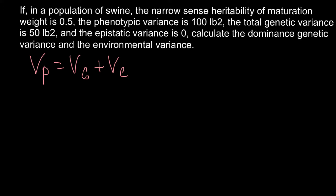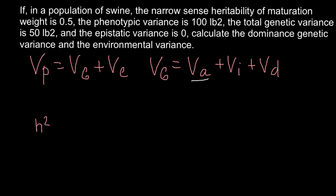Phenotype is just the visual appearance of an organism including all visible traits. The next formula is that Variance genetic consists of three variances: Variance additive + Variance epistatic + Variance dominance. For narrow sense heritability, we need only Variance additive, and the formula is h² (small h squared) = Variance additive divided by total phenotypic Variance.